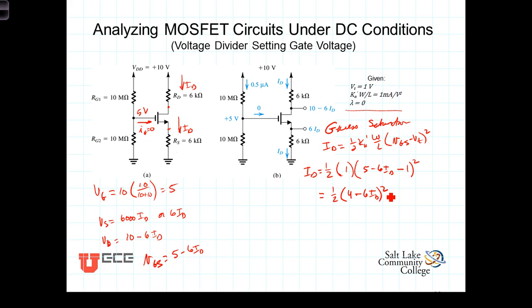Expanding this right side we get then that I_D is equal to 8 minus 24*I_D plus 18*I_D quantity squared. Now go ahead and plug that into the quadratic formula and we get two different values for I_D.